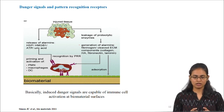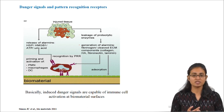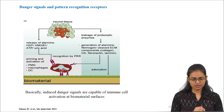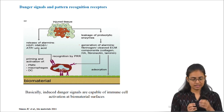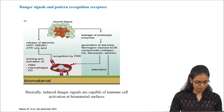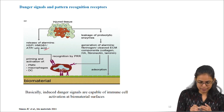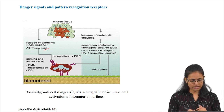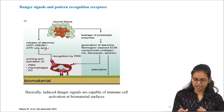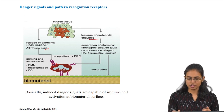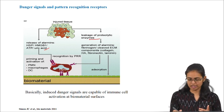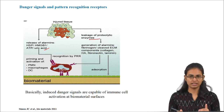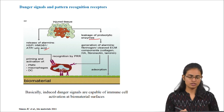Upon injury to the tissue caused by implantation, there is a release of alarmins and leakage of proteolytic enzymes. The alarmins are recognized by the pattern recognition receptors present on the polymorphonuclear leukocytes, causing their activation. The leakage of proteolytic enzymes also causes the generation of alarmins such as fibrinogen or cleaved ECM components. These cleaved ECM components can also get adsorbed onto the protein layer on the biomaterial, which can cause further immune reactions.